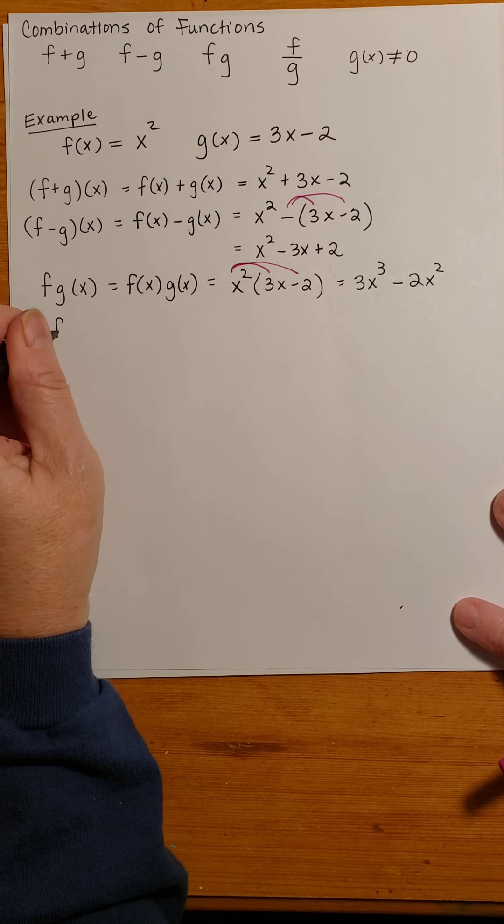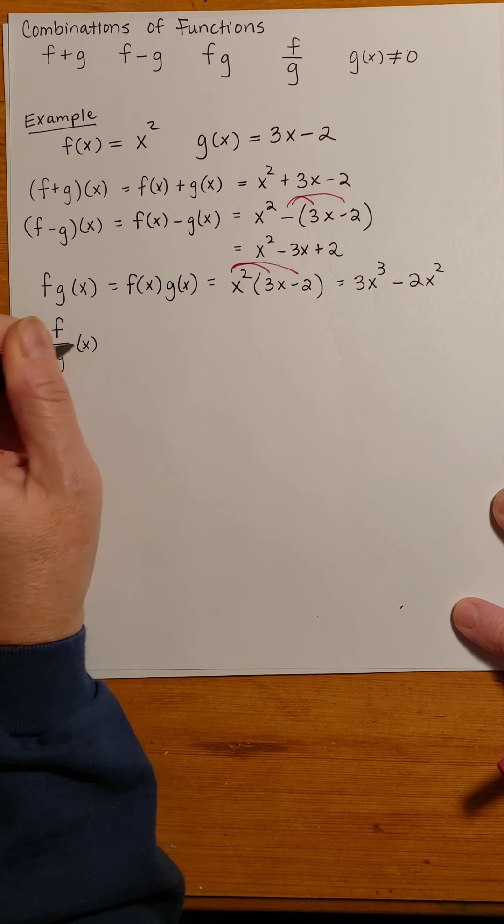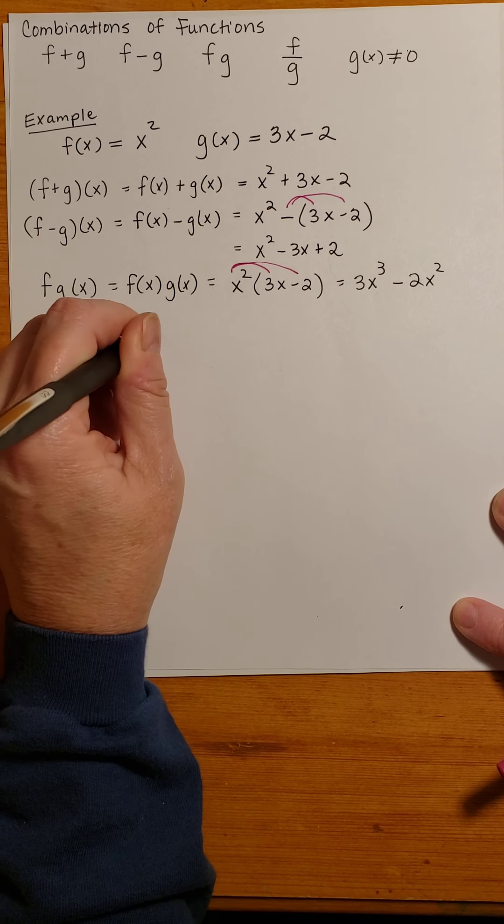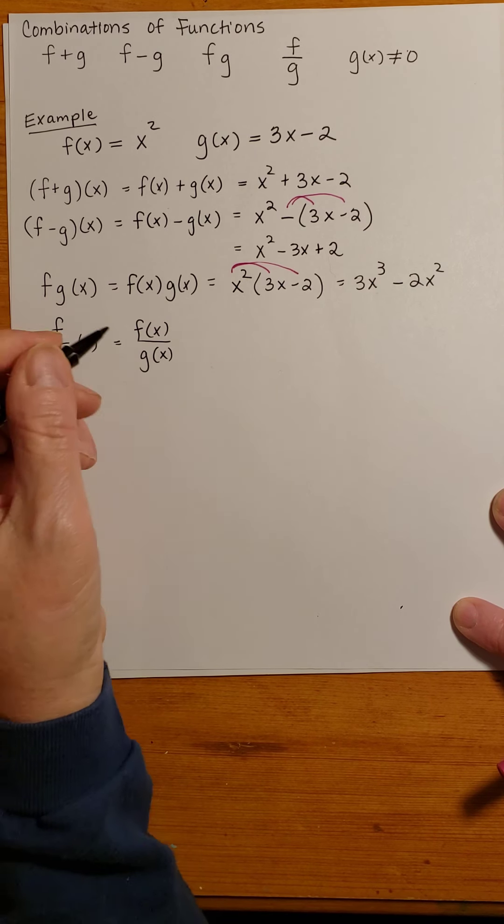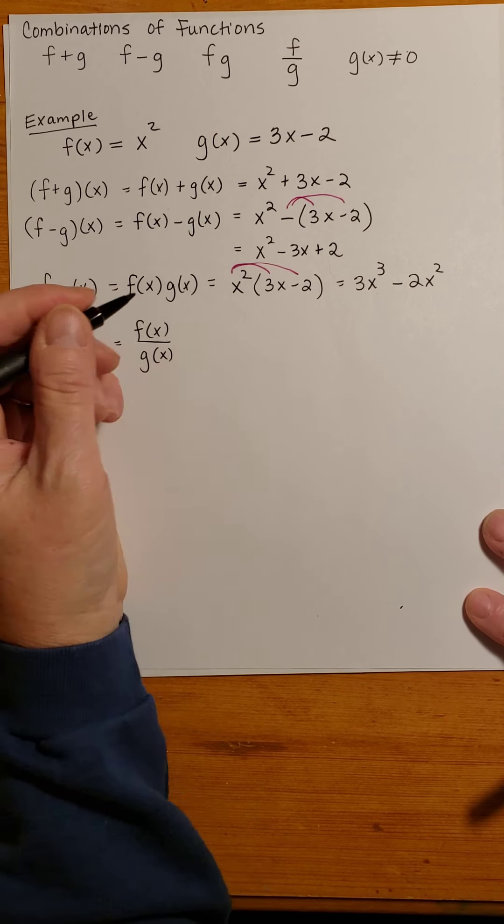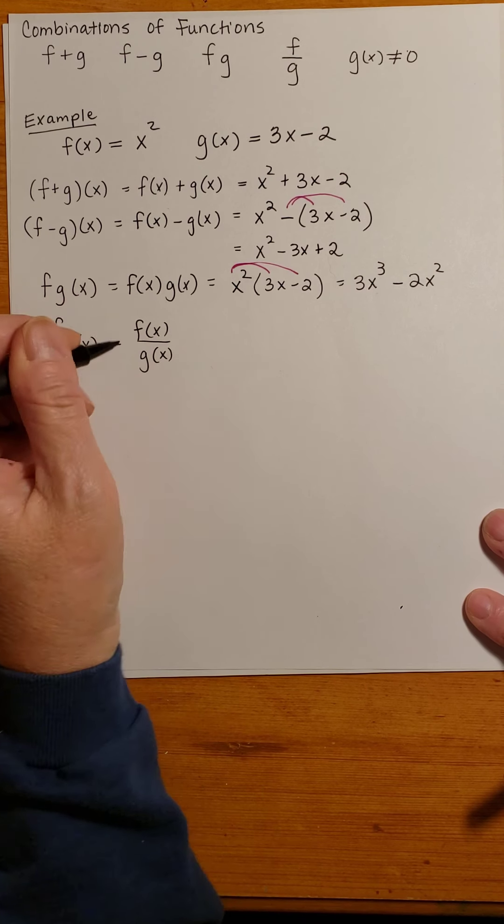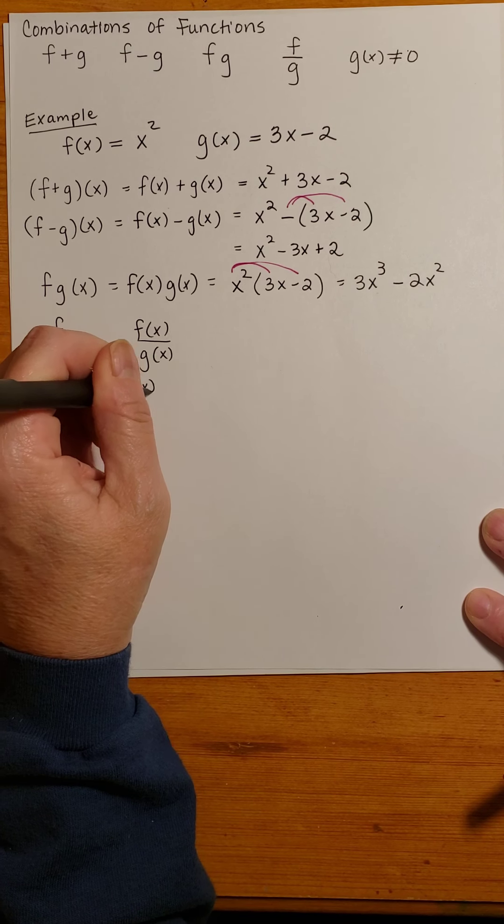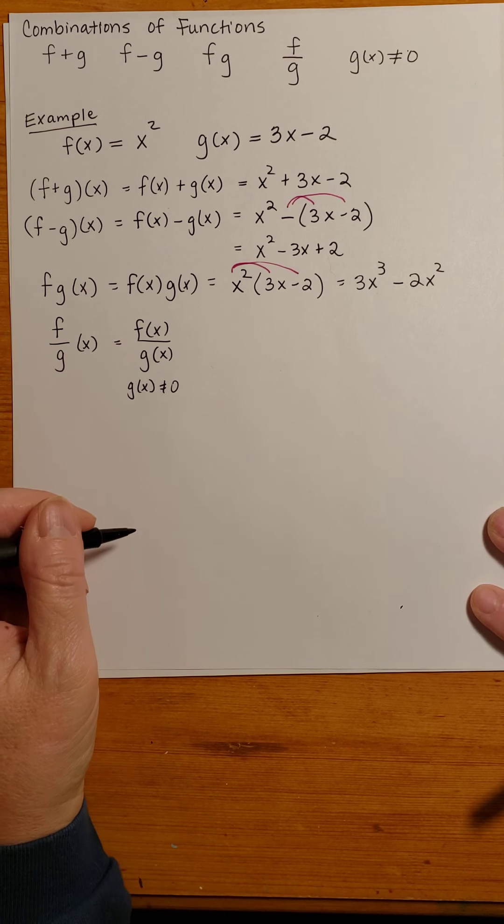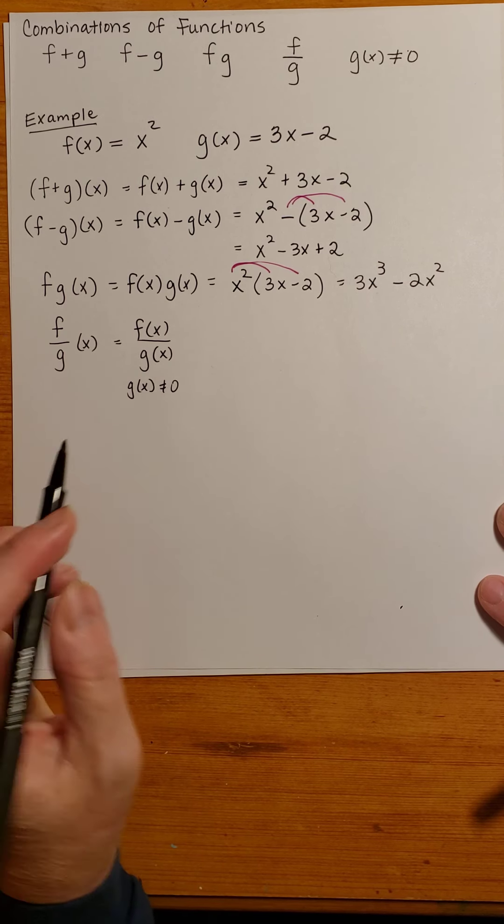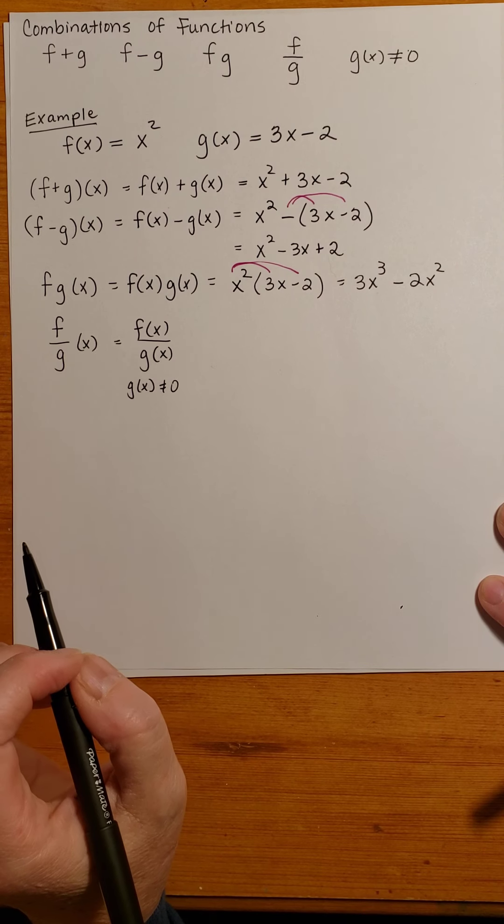Finally, we have f/g(x). And that's just f(x) divided by g(x). And we have to require, at the same time that we do this, that g(x) is not equal to 0, because now g(x) is in the denominator.